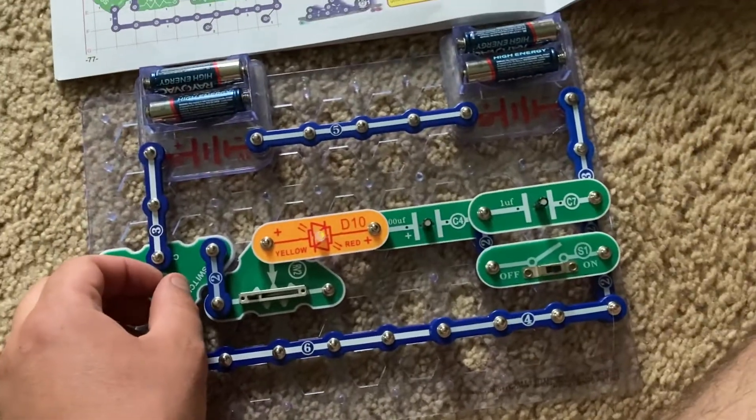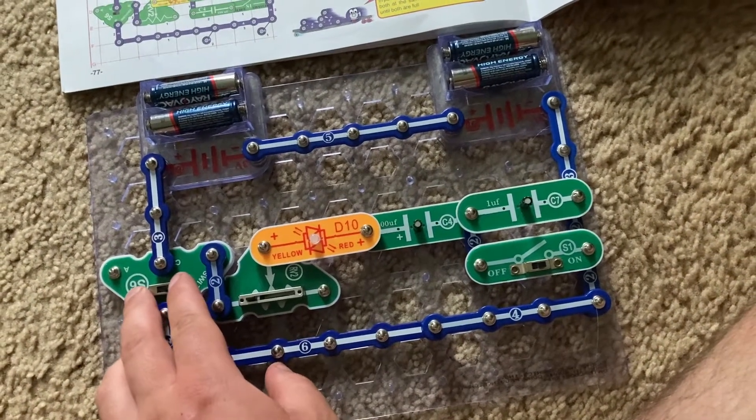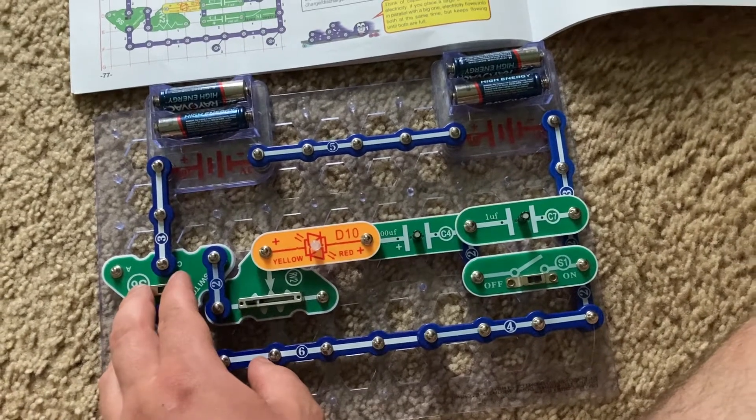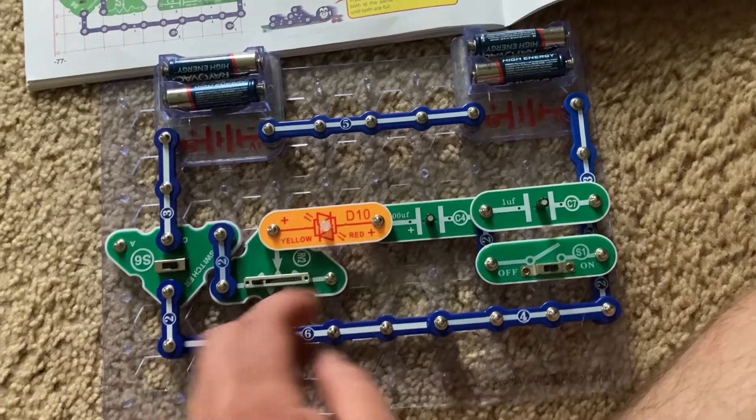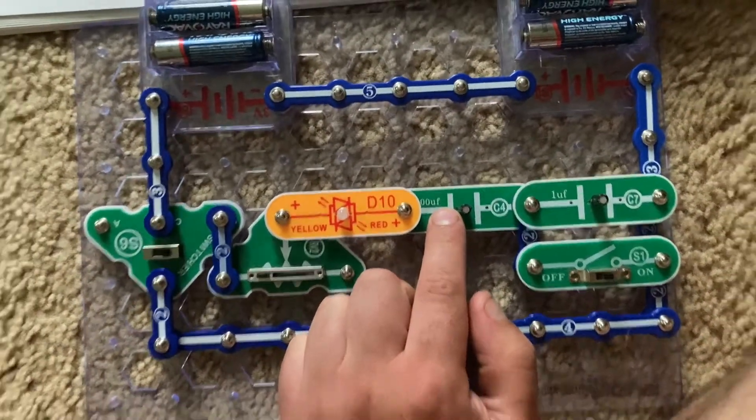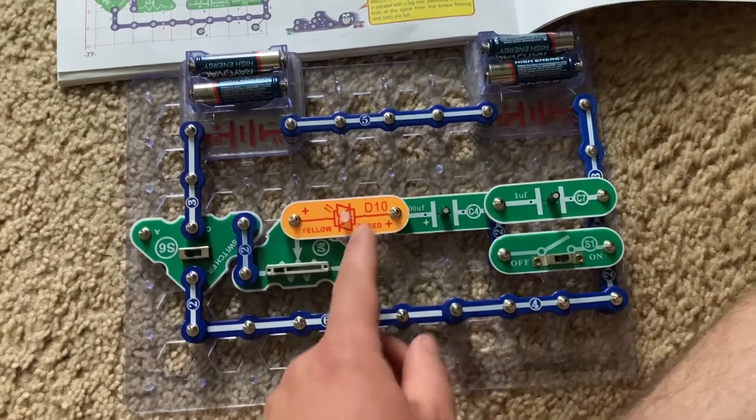You can repeat this, move the switcher to my right and then move it to my left. When I move the switcher to my right, the C4 capacitor charges, and when I move it to my left, it discharges.